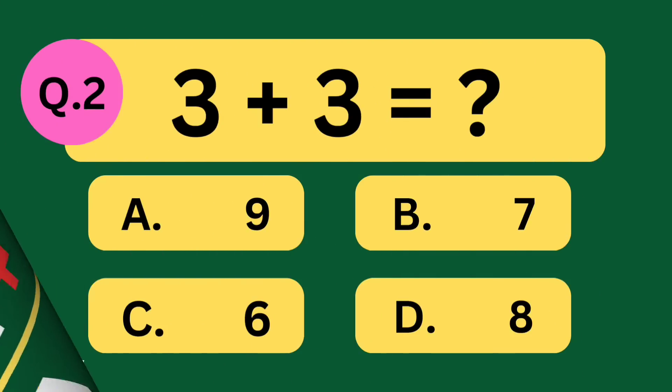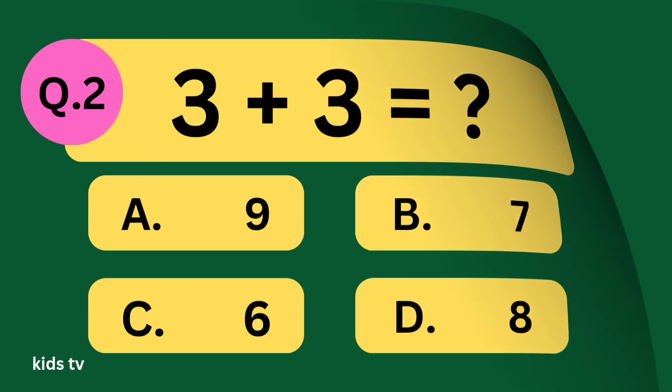3 plus 3 equal what? A: 9, B: 7, C: 6, D: 8.